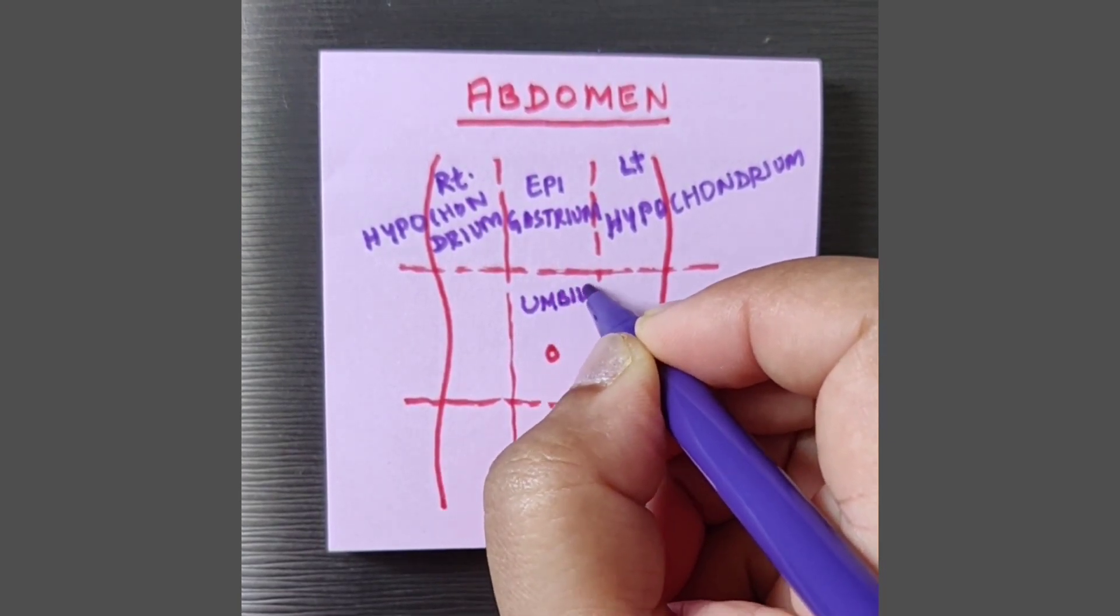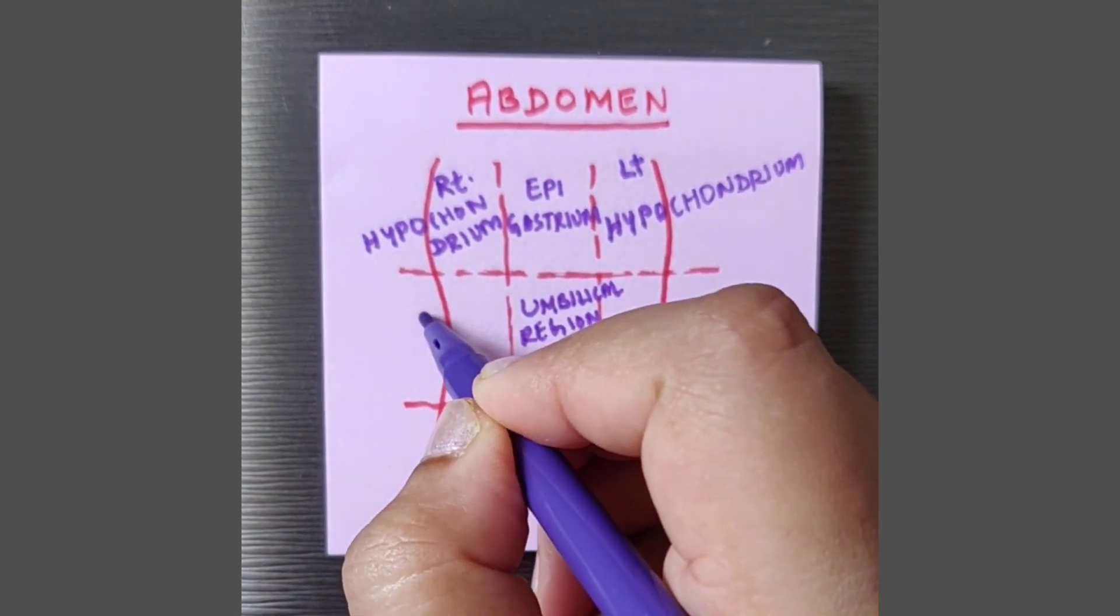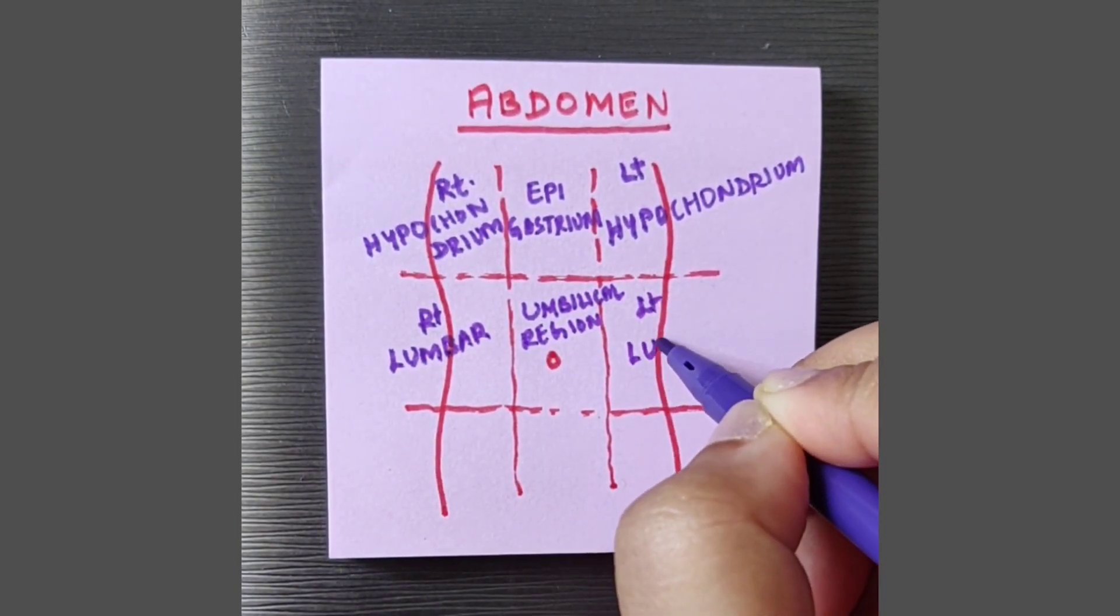Then comes the umbilical region. As you can see the umbilicus here. Then we have the right lumbar region and left lumbar region.